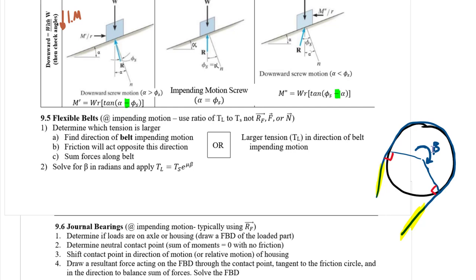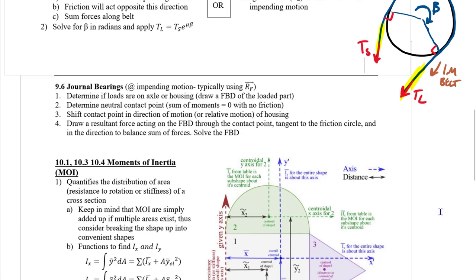When looking at a belt system, think about the impending motion of the belt. Whatever direction the belt is impending motion, the larger tension T_L is on that side and the smaller tension T_s is on the other. A fixed cylinder with a movable belt is easier to assess: the side you're pulling harder has the larger tension, and that is also the direction of impending motion.